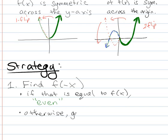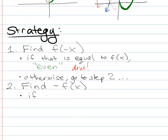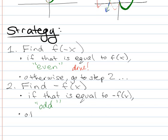Otherwise, go to step two. If that's equal to f of x, you're done. Otherwise, you're going to define negative f of x. And if that is equal to negative f of x, then you have an odd function.